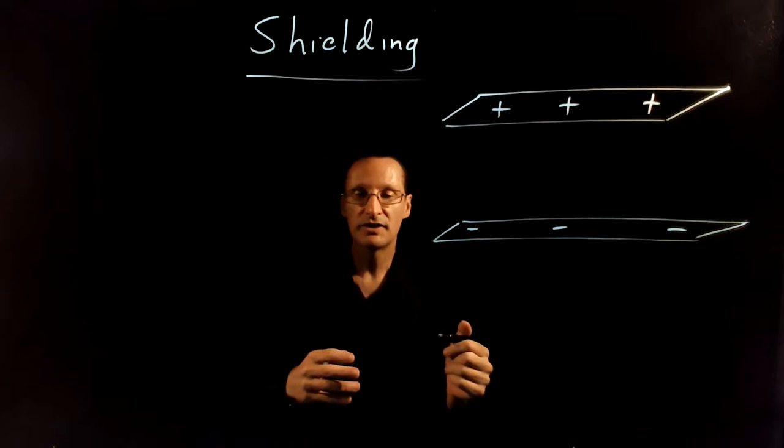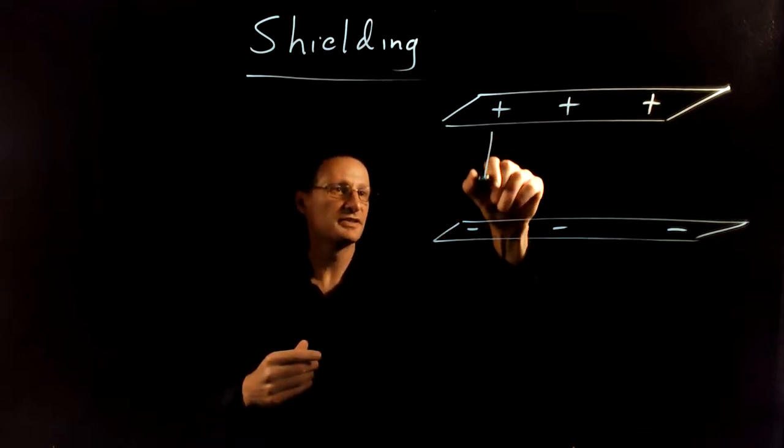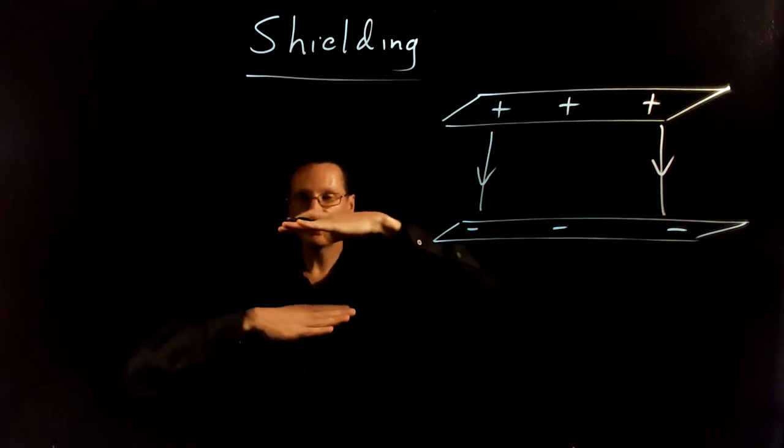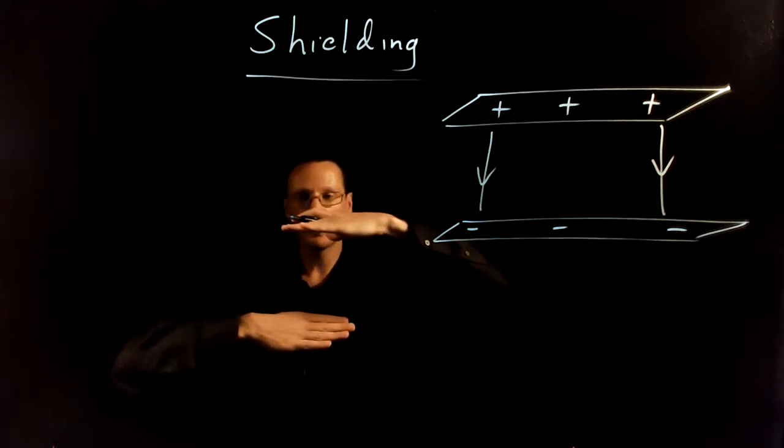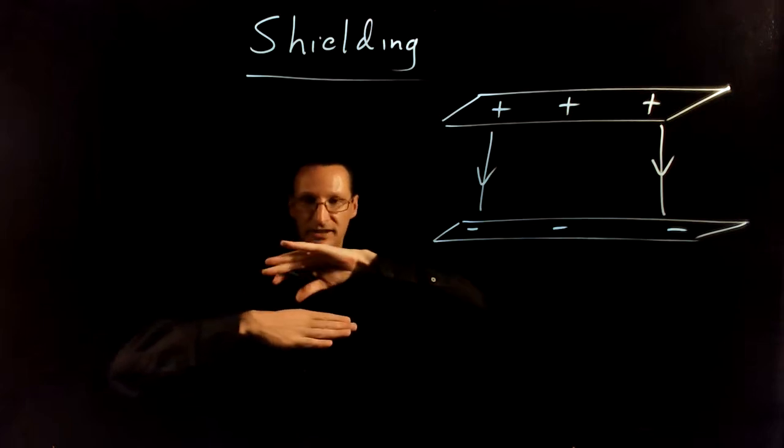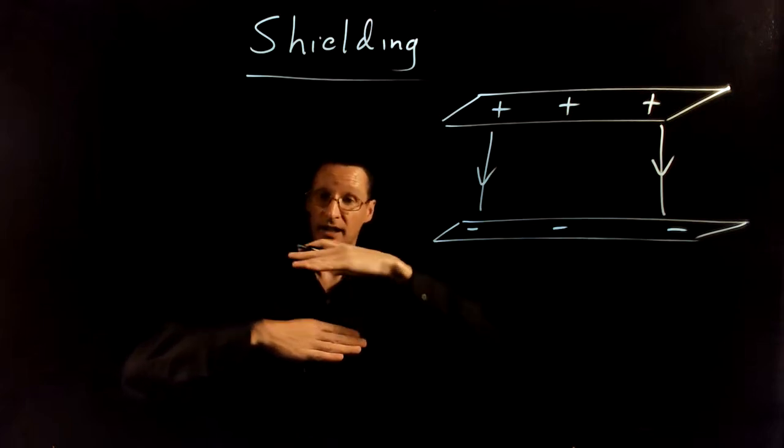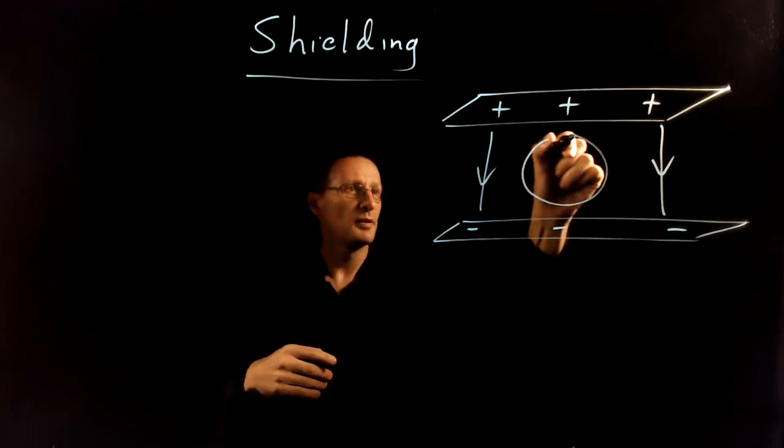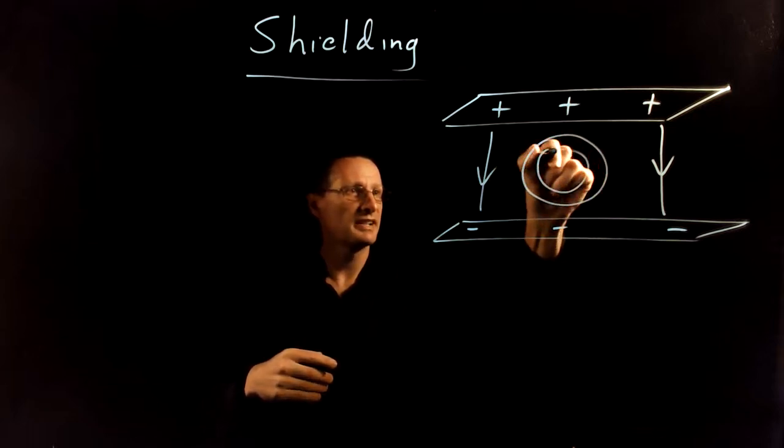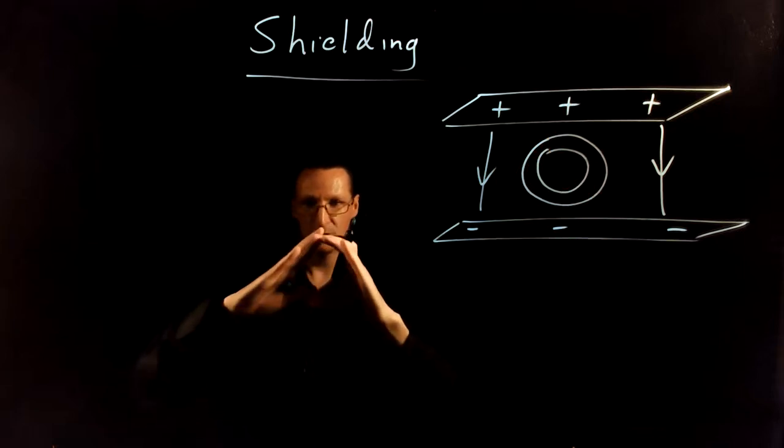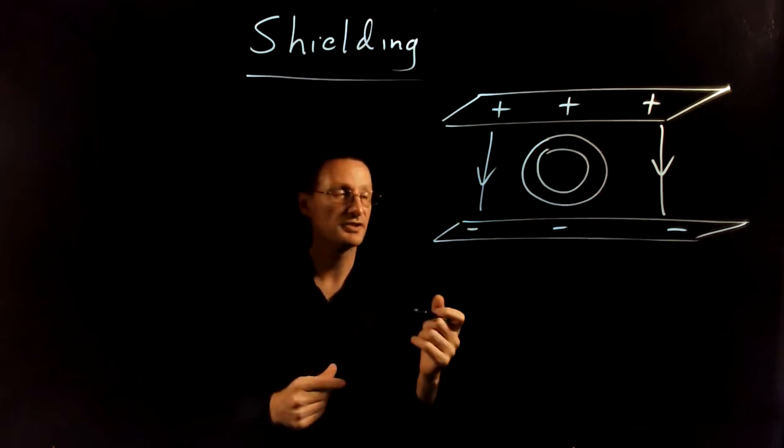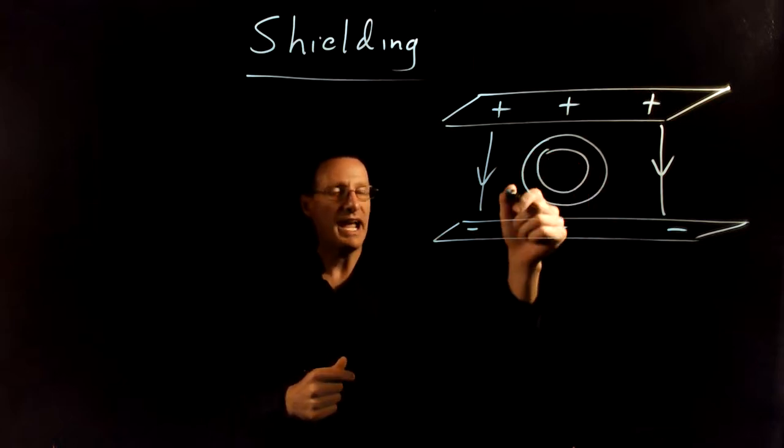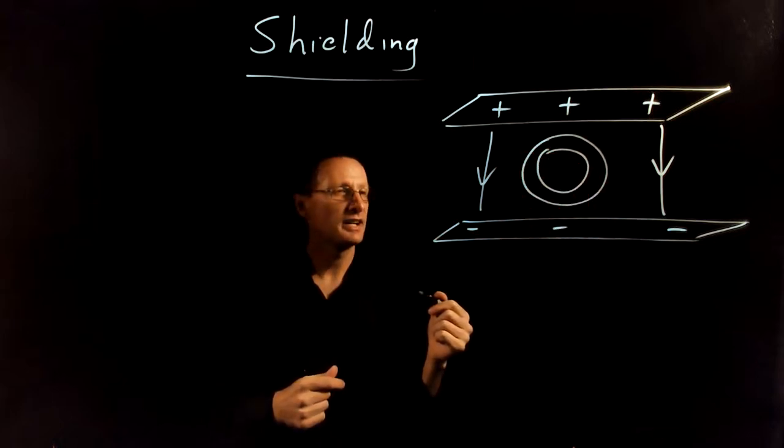So the electric field is going to point down like this. Now imagine that in this particular configuration we have these two parallel plates and the field inside is going to be a uniform electric field. Let's say we put a metal pipe or a conductive pipe inside here. So this is like a tube and it's a conductor so charges inside there can move freely. What is going to happen if you put it in this electric field?